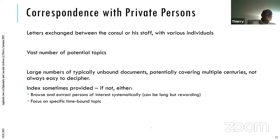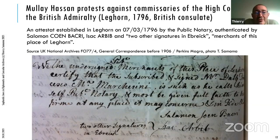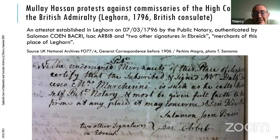Here is an example from the UK National Archives — a certificate established in Livorno on March 7th, 1796, by a public notary, authenticated by Salomon Cohen Bakri, Isaac Arbib, and two other signatures in Hebrew, who are merchants of Leghorn. This is an example of correspondence.